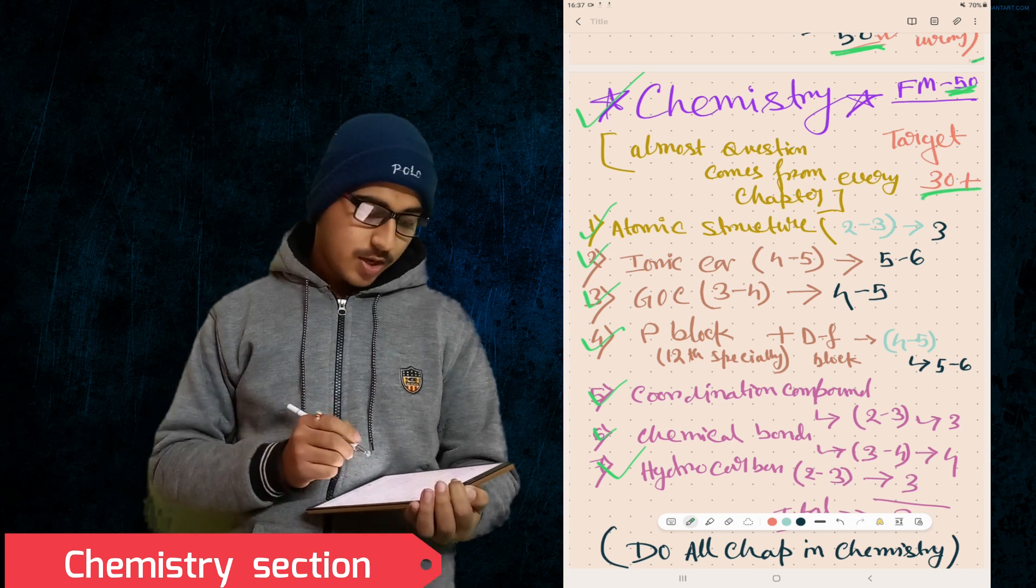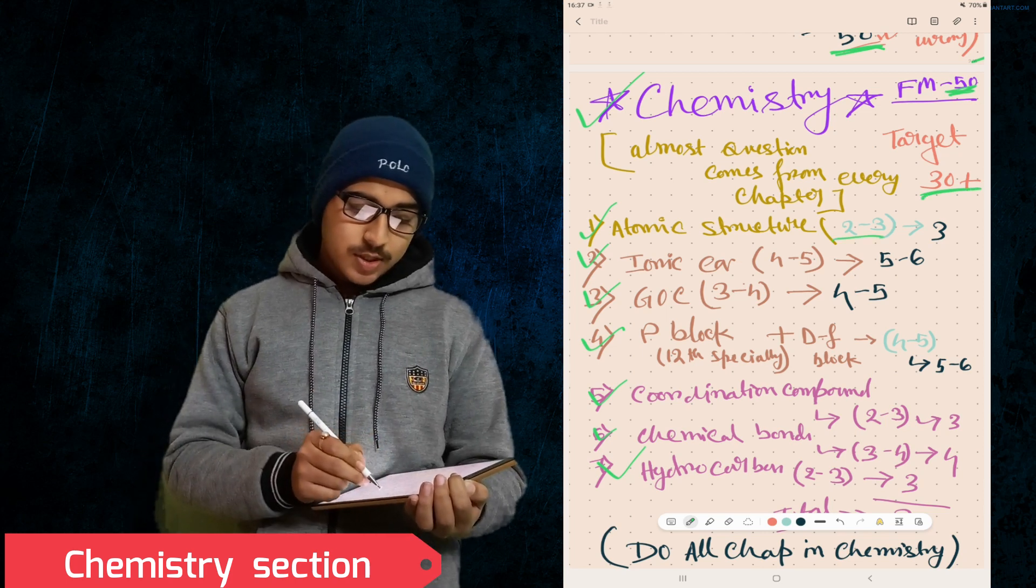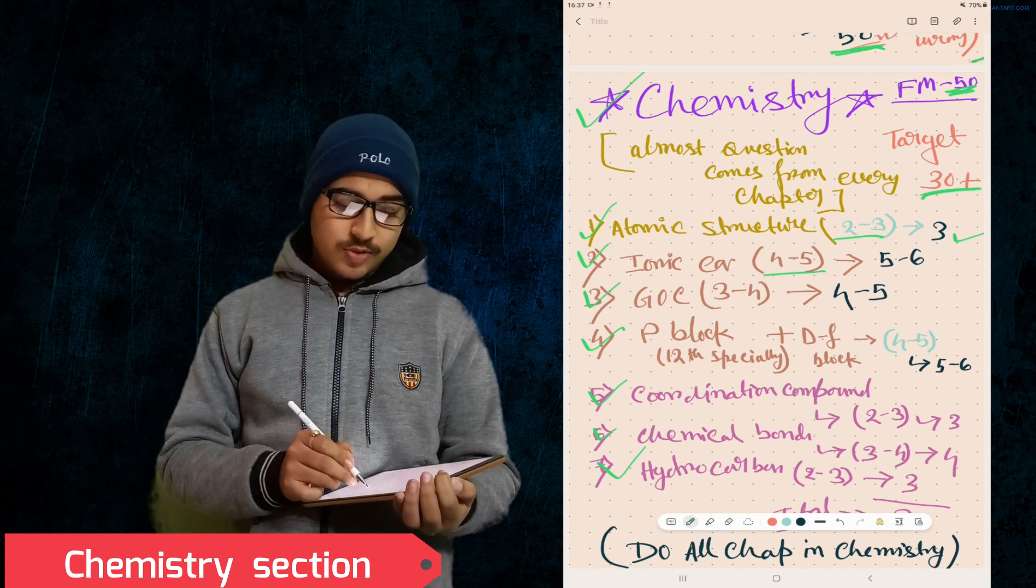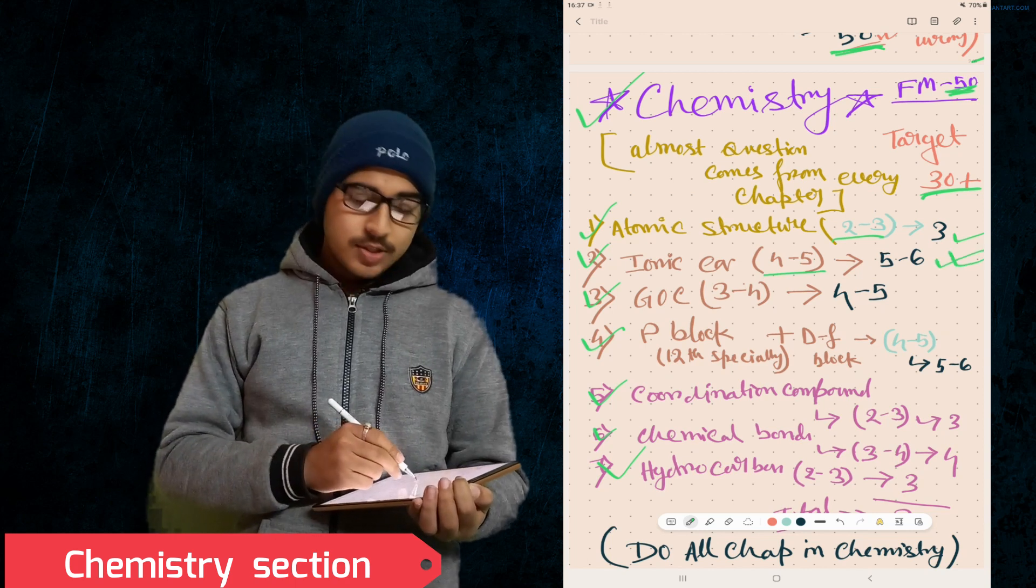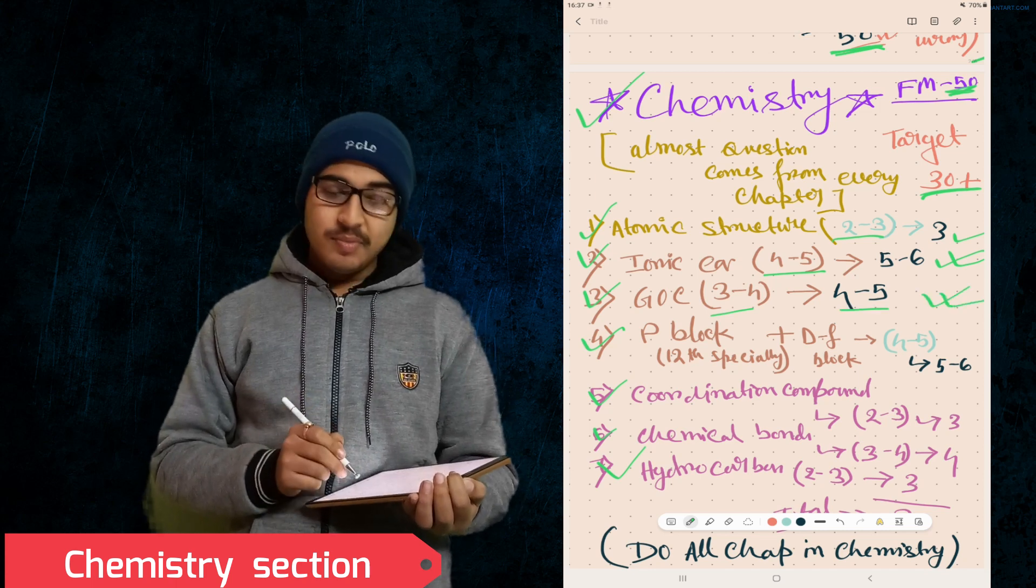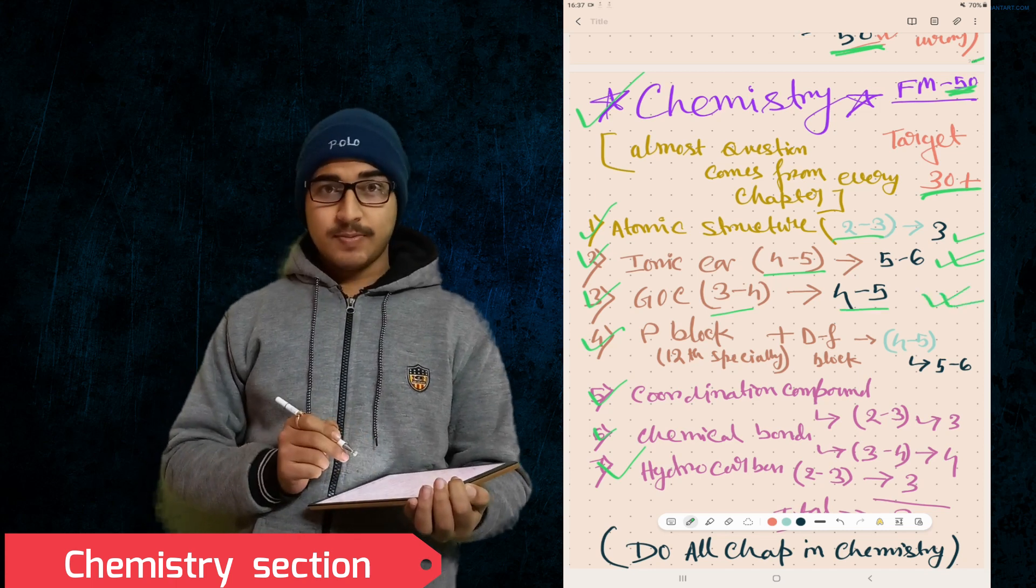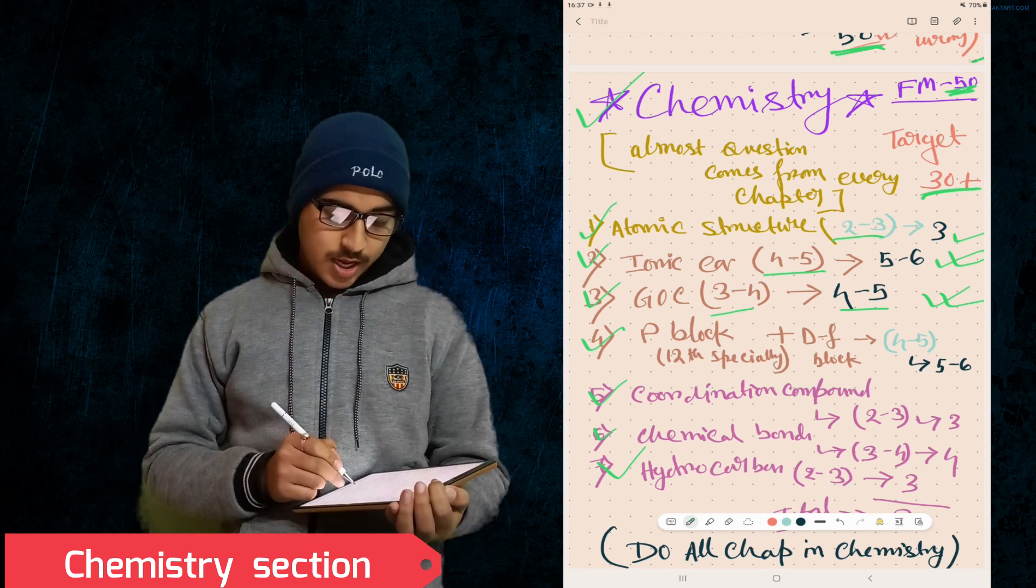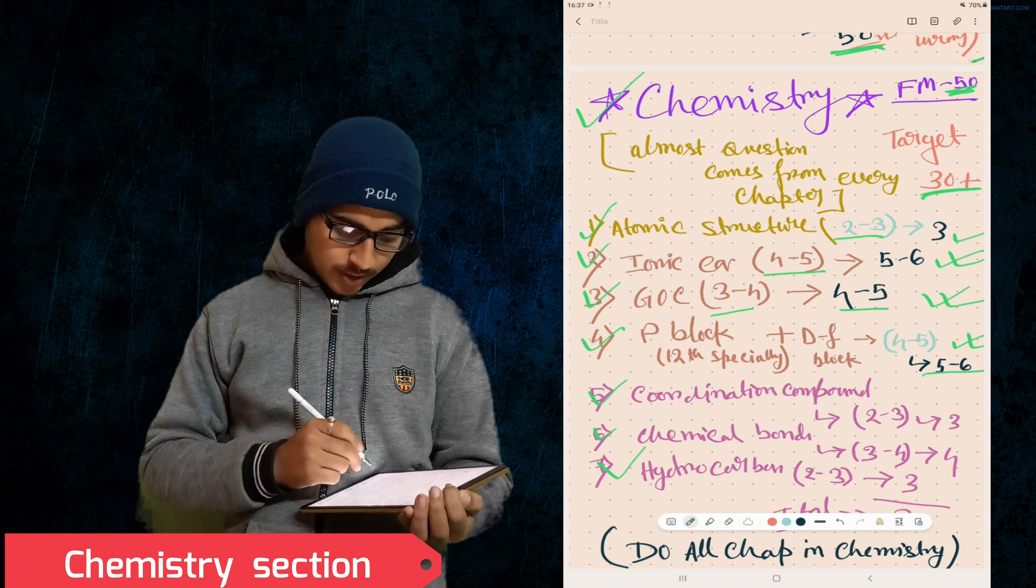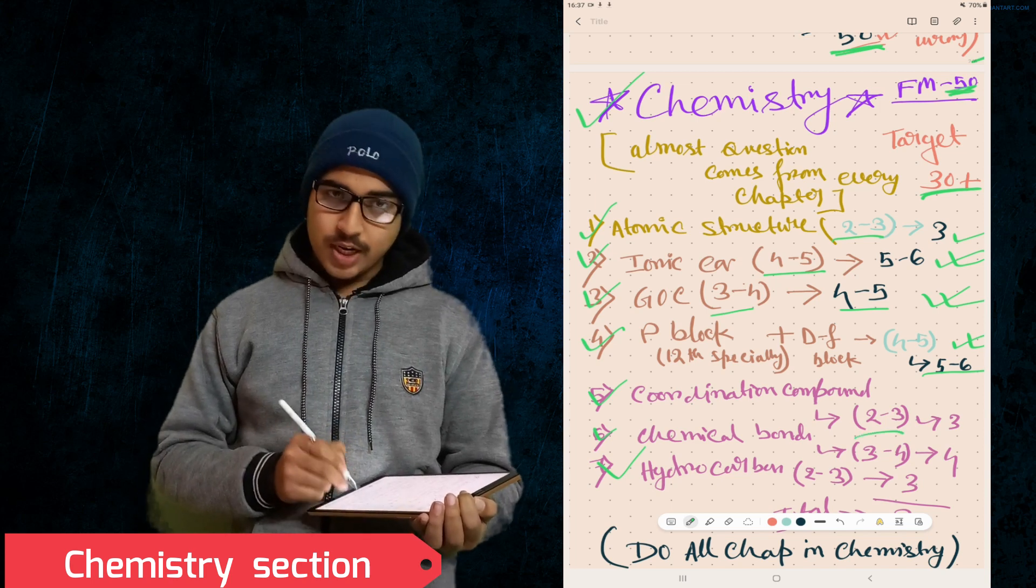Atomic Structure - two to three questions, three marks. Ionic Equilibrium - four to five questions, almost five to six marks. In GOC, three to four questions, so four to five marks. In P block and D block, especially Class 12, from four to five questions you can get five to six marks.